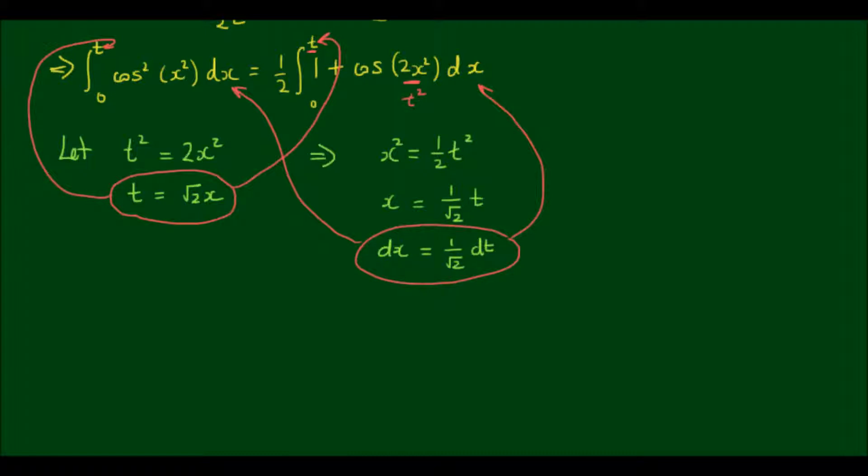So on the left hand side I have the integral from 0 to t of cos² x² dx is equal to now the integral from 0 to the square root of 2x of cos² of (1/2 t²) times 1 on root 2 dt, and this simplifies to 1 on root 2 outside of the integral from 0 to root 2x of cos² of (1/2 t²) dt.